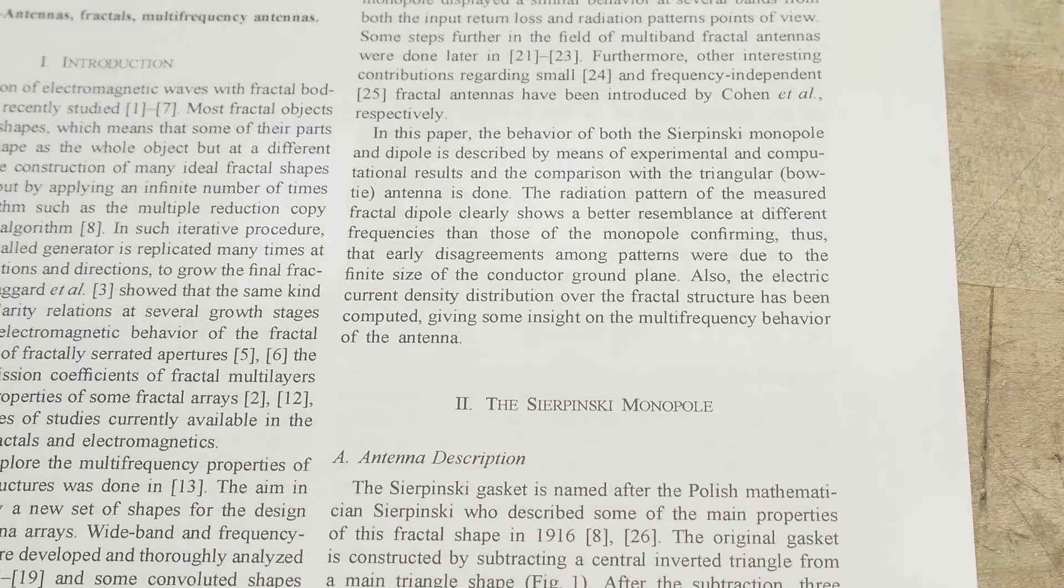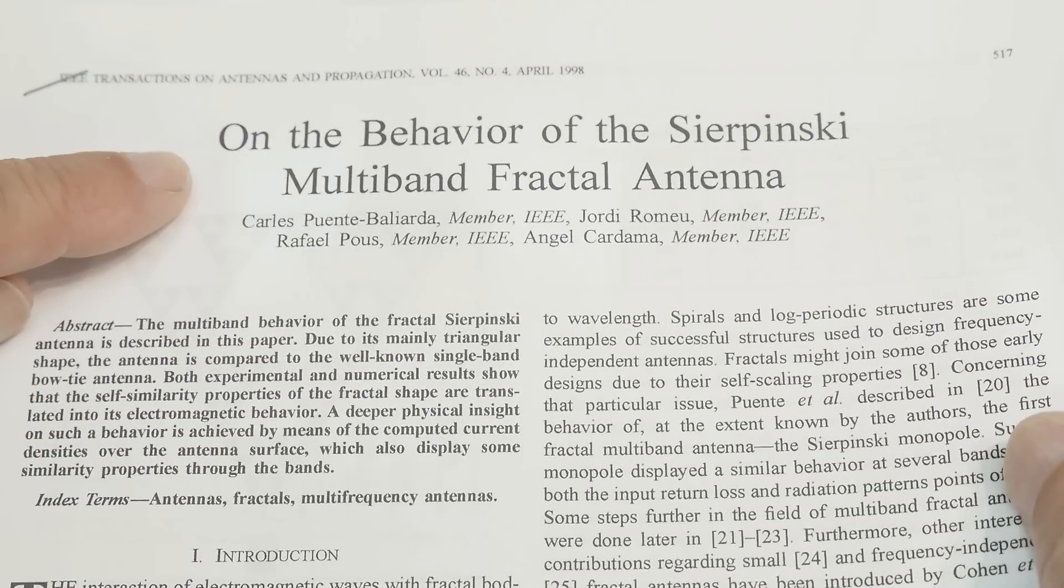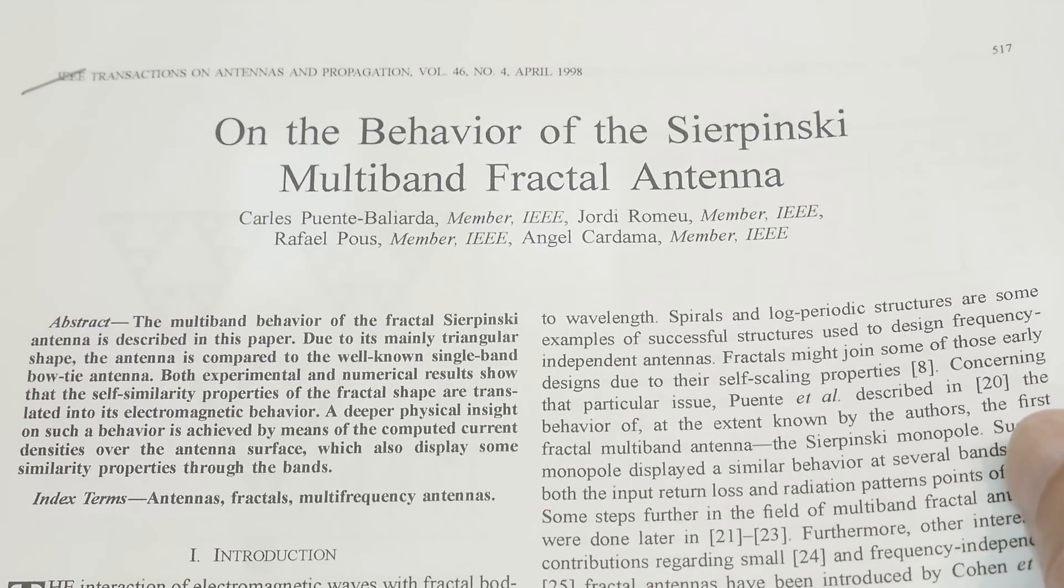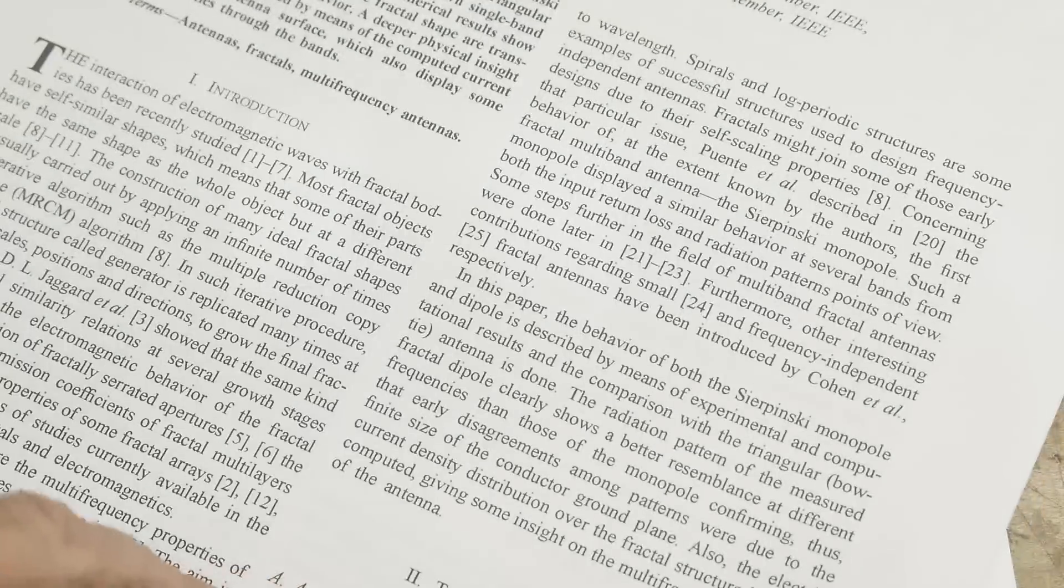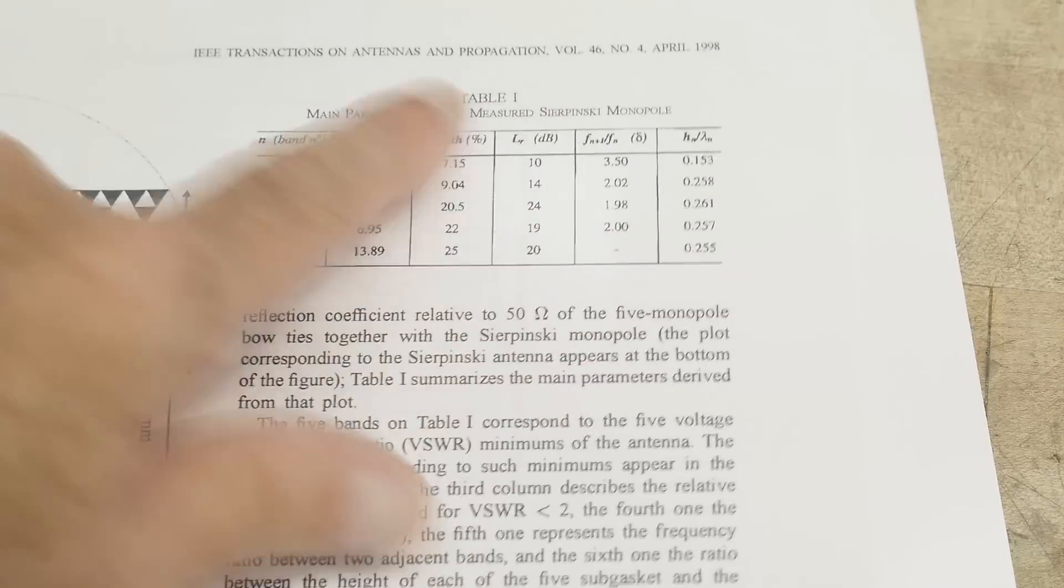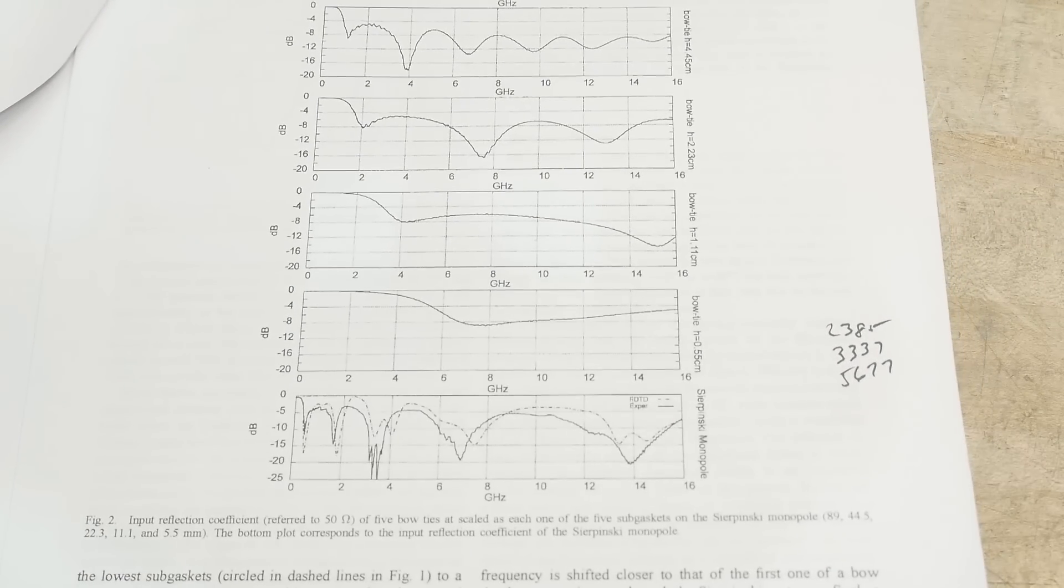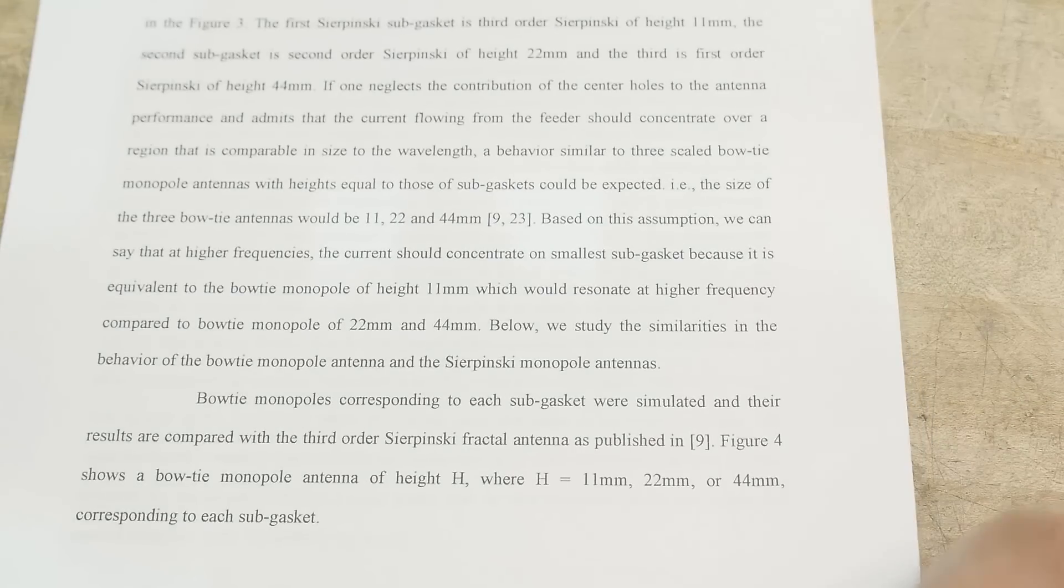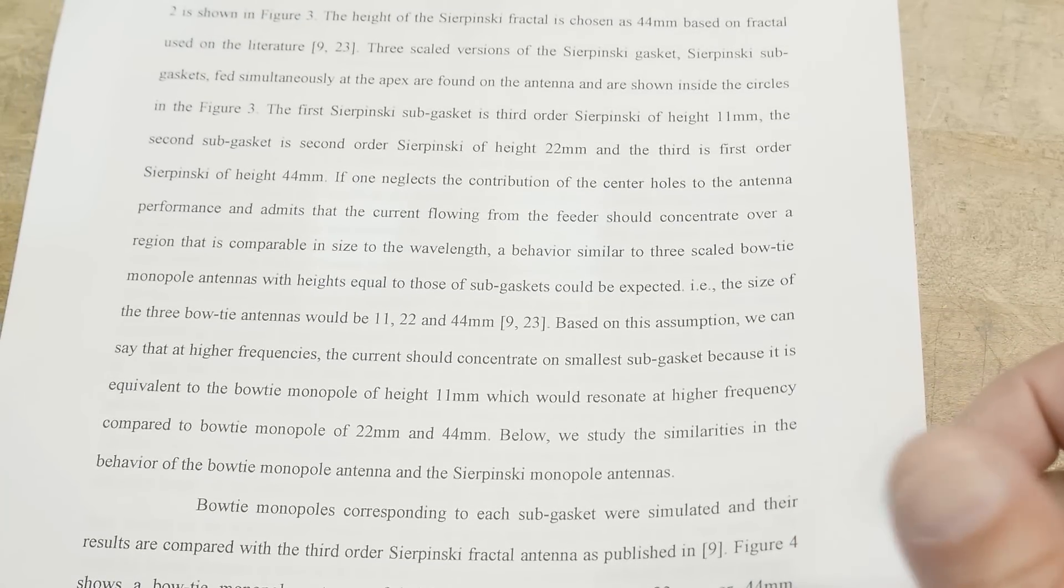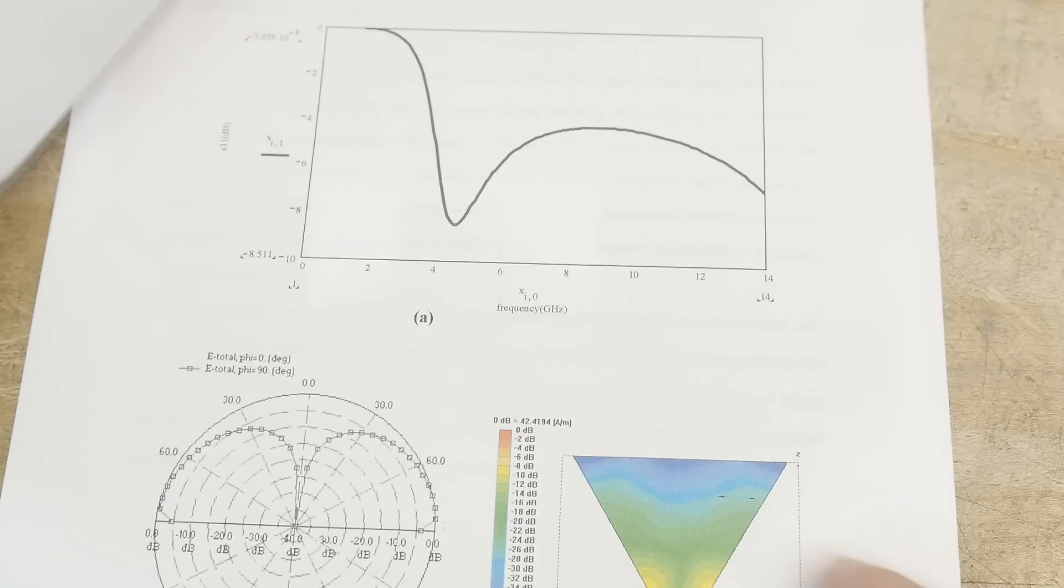Here's one, this was an IEEE paper on the behavior of the Sierpinski multi-band fractal antenna. This talks about the triangle and the different dimensions and different radiation and places where it can actually oscillate.